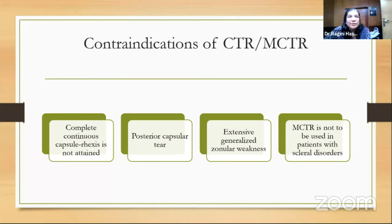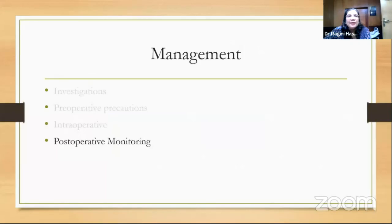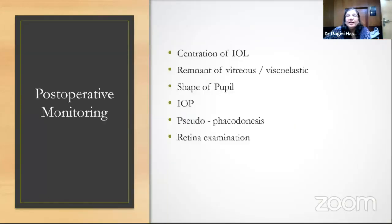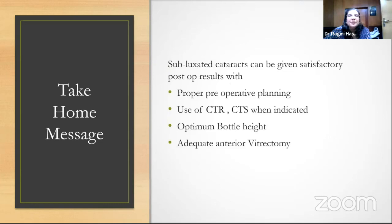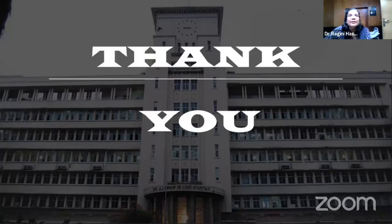Do not use a CTR when there is no rhexis or when there is a posterior capsular tear — we have seen cases where rings ended up in the vitreous. Post-operative monitoring is very important: check IOL centration, presence of vitreous, pupil shape, intraocular pressure, pseudophacodonesis, cystoid macular edema, and retinal examination. Subluxated cataracts can give good results with proper pre-operative planning, proper intra-operative management, and adequate vitrectomy when needed.